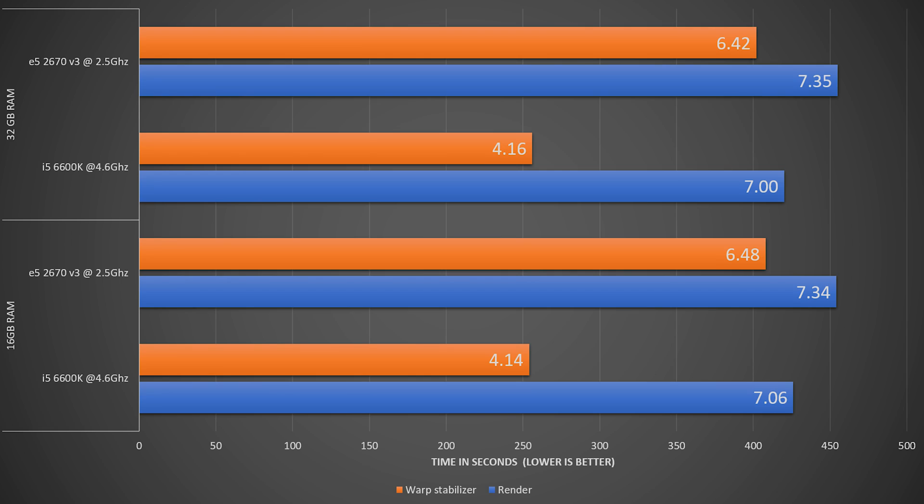Both PCs were running the video editing tasks off a boot SSD and both had a GTX 1070 to assist with performance in rendering, meaning I was trying to minimize all the variables — which is not very doable since one system is newer than the other.